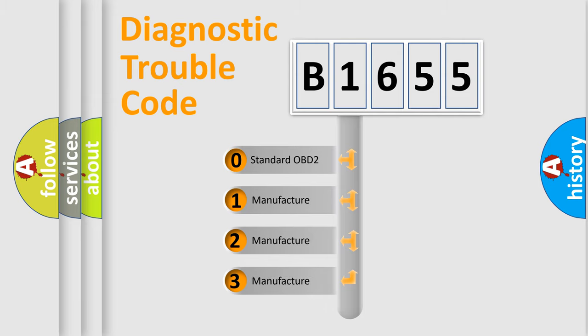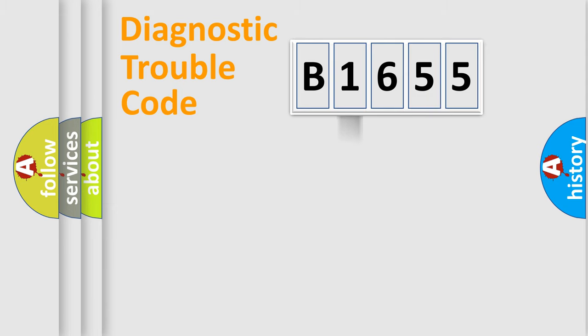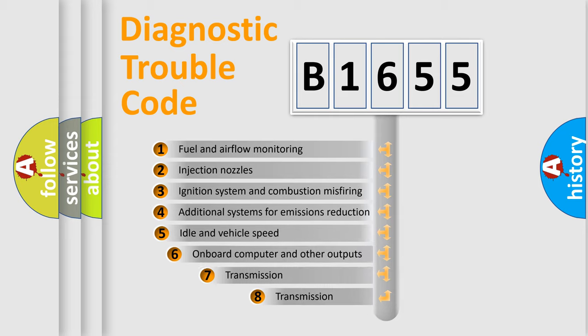If the second character is expressed as zero, it is a standardized error. In the case of numbers 1, 2, or 3, it is a manufacturer-specific expression of the car specific error.